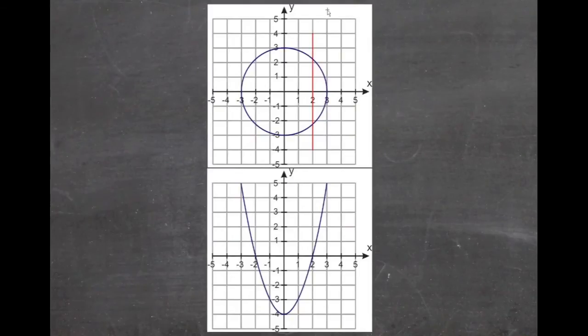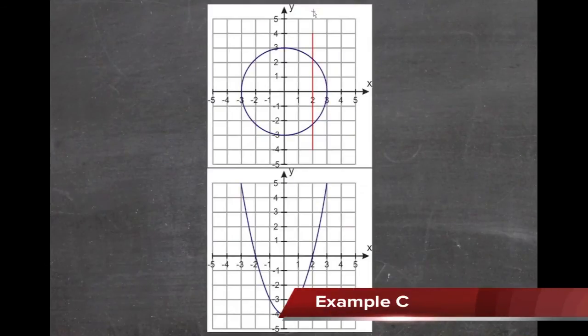When you're actually given a graph, finding out whether or not it's a graph of a function is actually very easy. All you have to do is test the graph with the vertical line test. If you can draw lines anywhere along the graph, vertical lines, without ever crossing more than one point, then it qualifies as a function.